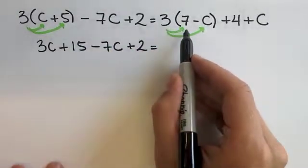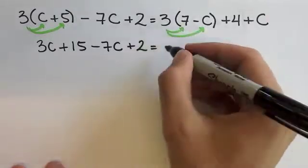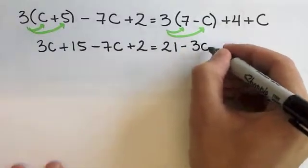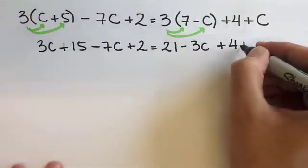On the right side, when using the distributive property, 3 times 7 would give you 21. 3 times negative c gives you negative 3c. And we copy the rest of the equation.